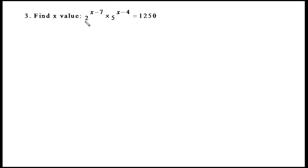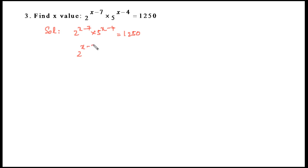The third question: 2 to the power of (x − 7) multiplied by 5 to the power of (x − 4) equals 1250. On the right-hand side we have 1250. Let's represent 1250 in terms of powers of 2 and 5.